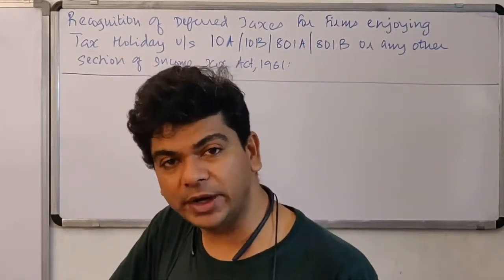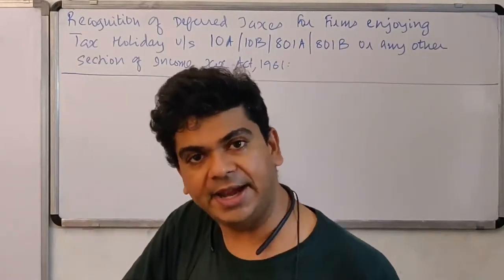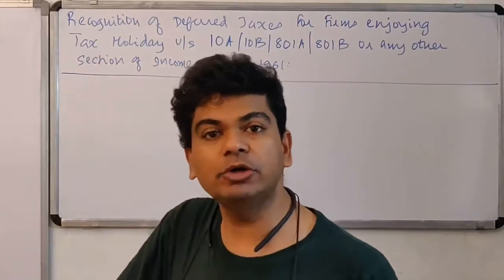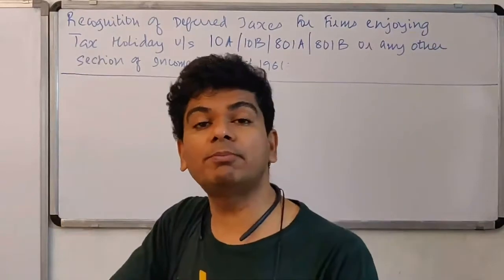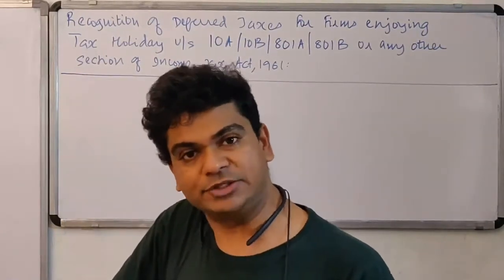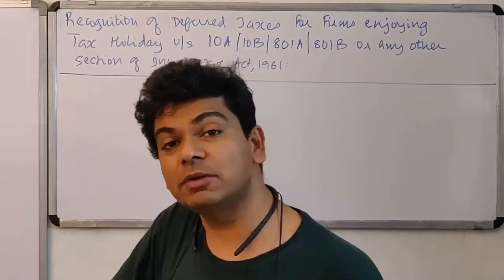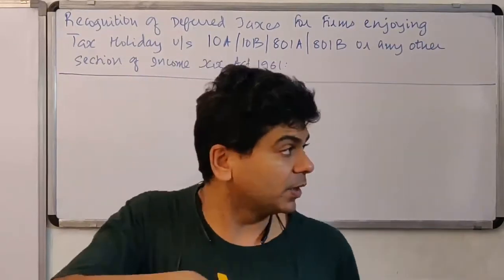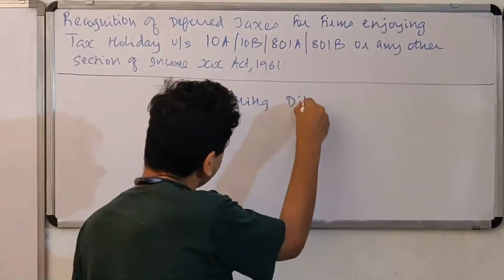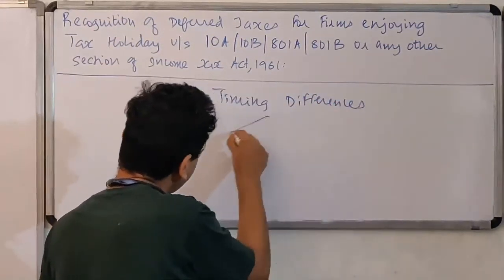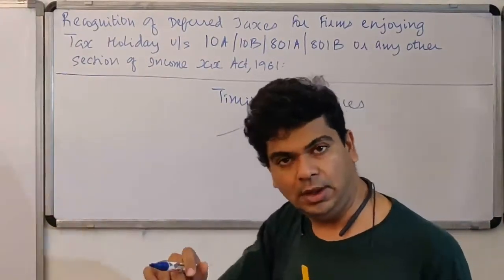Guidance is given in Accounting Standard 22. An explanation has been inserted in AS 22 to guide entities attracting these sections on how to measure the deferred taxes. First of all, you are supposed to compute whether there are timing differences. Once you come to the conclusion that there are timing differences, these timing differences will be segregated into two categories. First, identify whether there are timing differences — let's say the answer is yes. Then these timing differences should be classified into two categories.